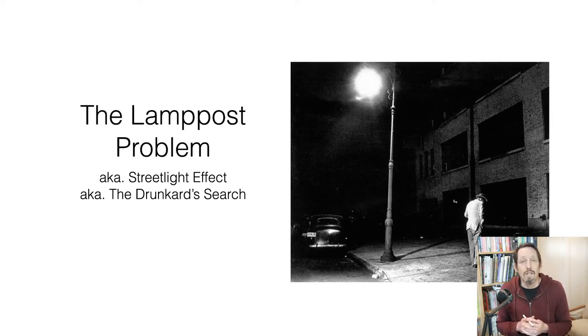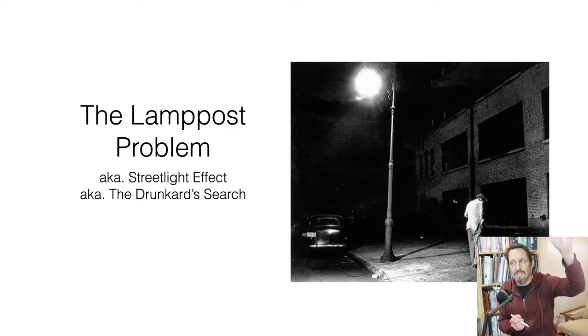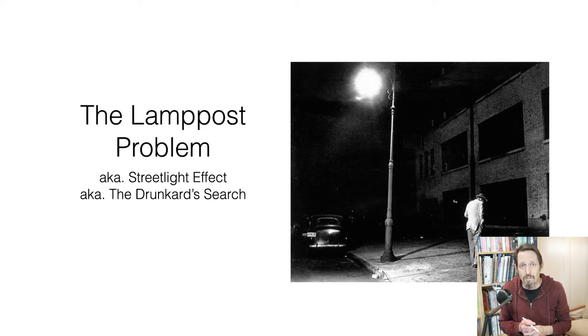The story of the drunkard's search: a cop is walking his beat and comes across a person on his hands and knees searching for something. The cop asks what he's doing. The person is drunk and says he's looking for his house key. The cop helps them look for minutes but can't find anything. Eventually the cop asks, 'Are you sure you lost your keys here?' The drunk person says, 'Well no, I lost them in the park over there, but that's dark—there's no lights. I'm going to look here where the light is.'